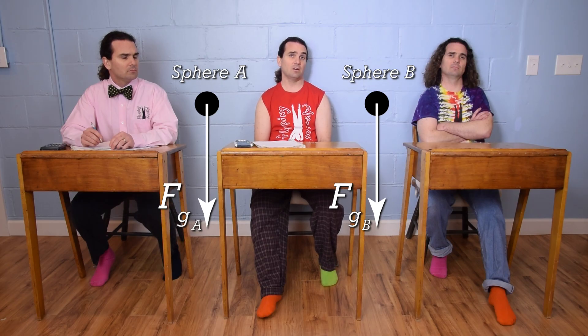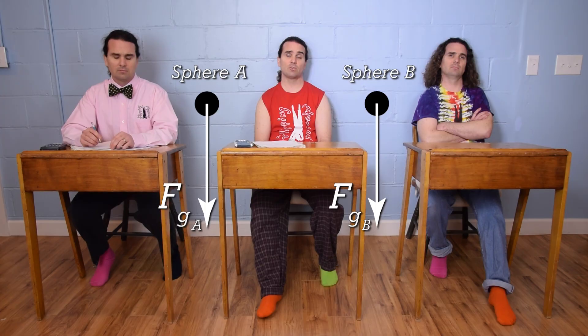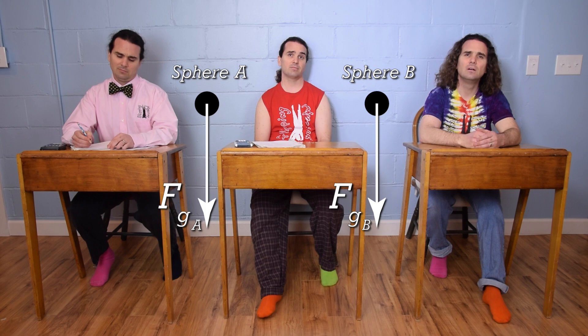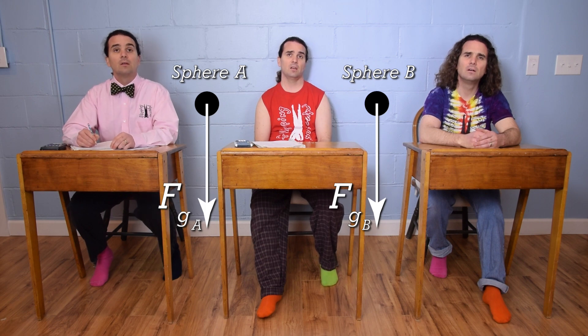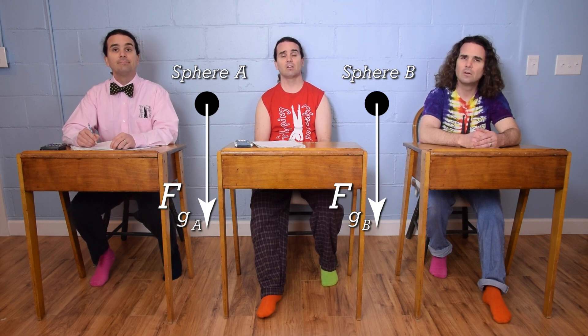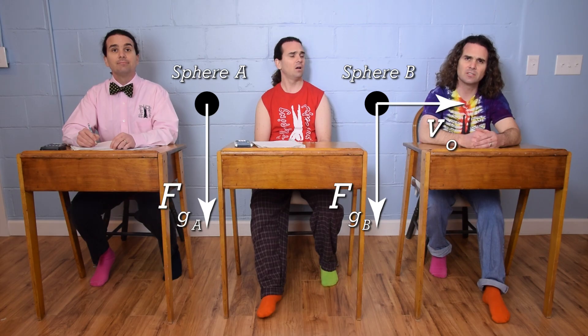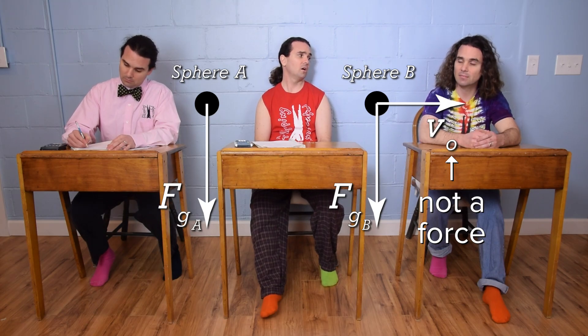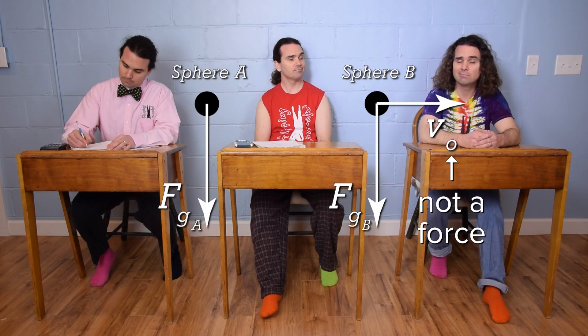And there is no air resistance, so no force of drag, that's all I can think of. Why don't we add V-naught to the right on sphere B? Because velocity is not a force. Oh yeah, right, my bad. That's great, Bobby.